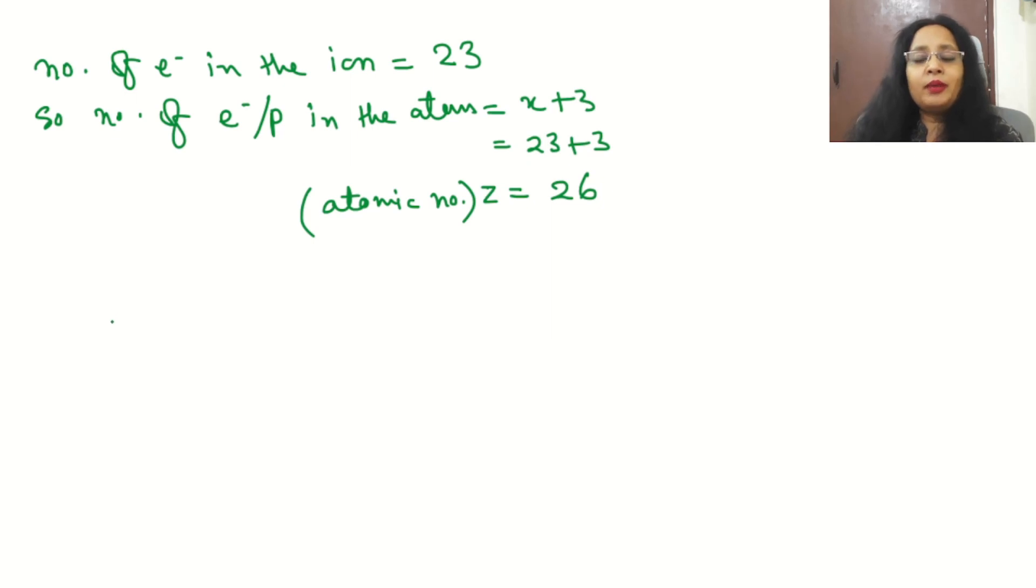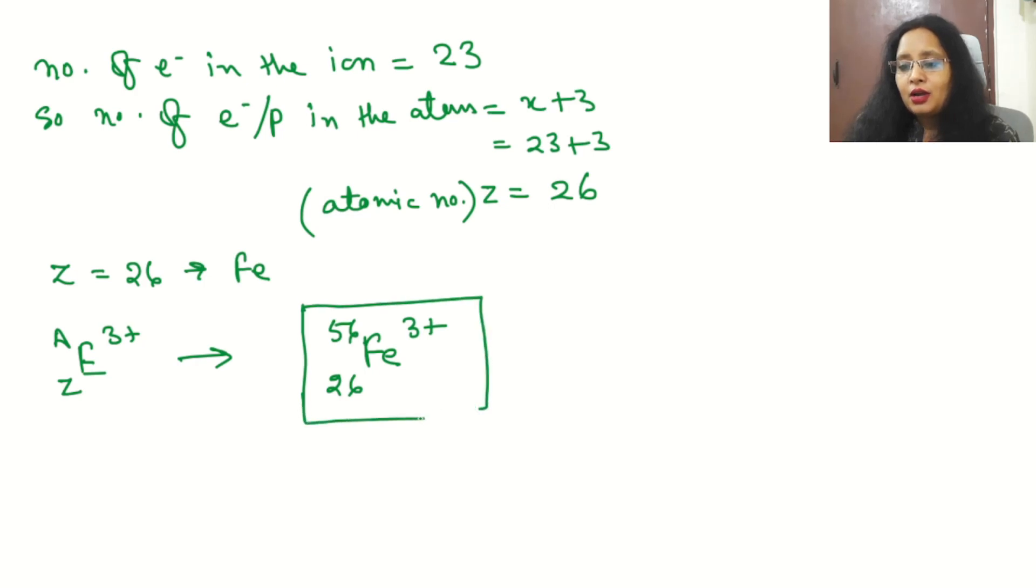So we got the atomic number. I already told you, if atomic number is known, we can assign the symbol. We need to learn this. So z atomic number 26 belongs to iron. So now, according to what we guessed in the beginning, if we write, our symbol becomes: iron 26, 56, and 3 plus. And this is our symbol assigned, which is the ion formed. This is Fe 3 plus ion.